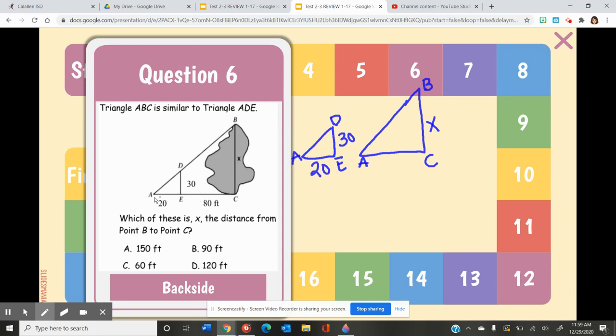And I need to know the whole side length of AC. So 80 is just EC, so I have to add AE side length of 20. So 20 plus 80, well that's 100. So now I'm looking for the value of X, which is the distance from point B to C. So here I'm looking for this side length here.